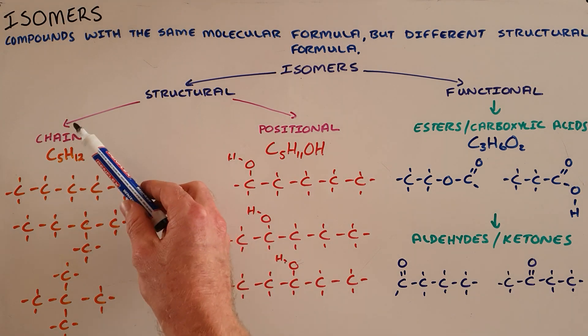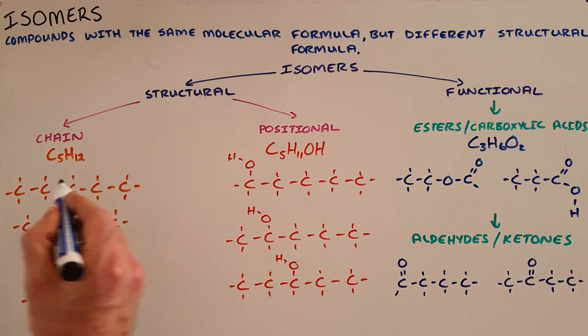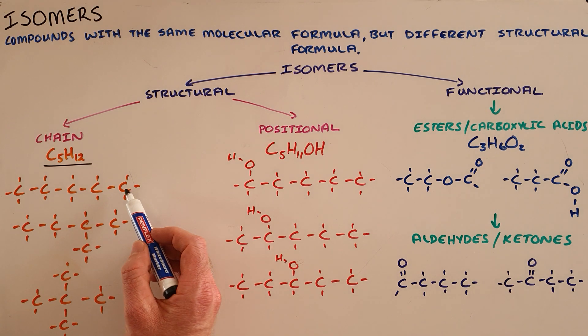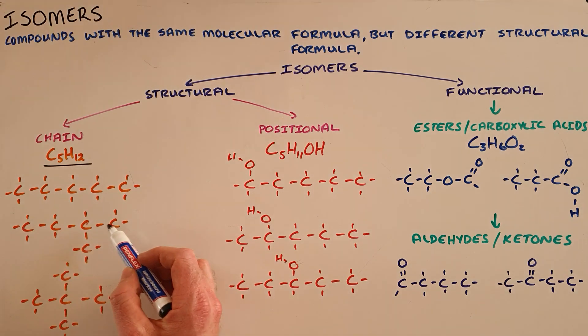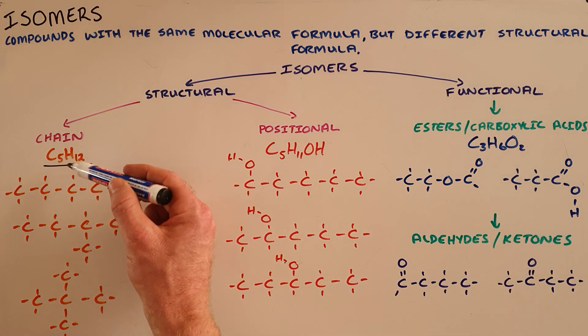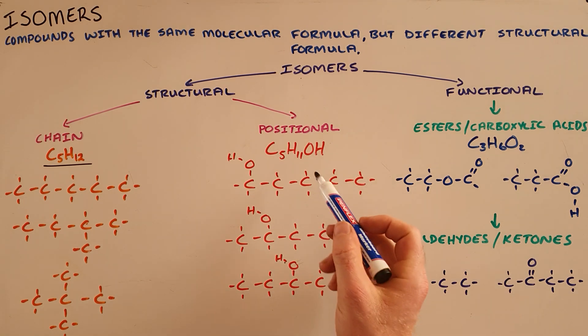Where we can see here, chain isomers for example something with a formula C5H12 could either be a simple five carbon chain, it could be a four carbon chain with a single branch, or a three carbon chain with two branches. All of these have the formula C5H12 and it's called a chain isomer because the chain length has changed, and any of these three are considered chain isomers of each other.